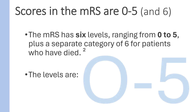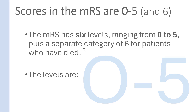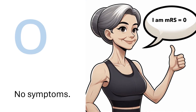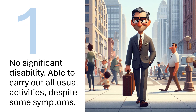The MRS has six levels ranging from zero to five, plus a separate category of six for patients who have died. The levels are: 0 — no symptoms; 1 — no significant disability, able to carry out all usual activities despite some symptoms.